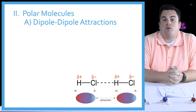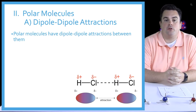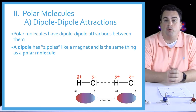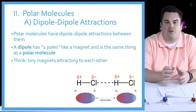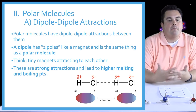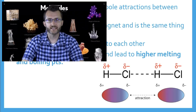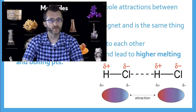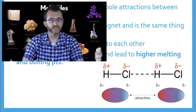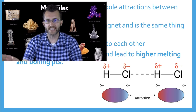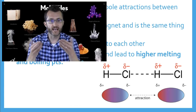For polar molecules, the first intermolecular force is dipole-dipole attraction. Polar molecules have dipole-dipole attractions between them. A dipole has two poles, like a magnet, and is the same thing as a polar molecule — think tiny magnets attracting each other. These are strong attractions that lead to higher melting and boiling points. For example, HCl has a polar bond and is a polar molecule with a delta positive and delta negative end. Taking two of these dipoles, positive attracts to negative, giving us dipole-dipole attraction.